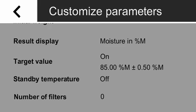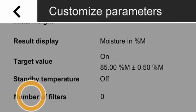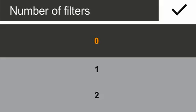To include the weight of the glass fiber filters into the measurement, select Number of Filters. For the analysis of ketchup, you need two filters.